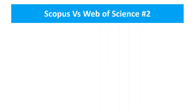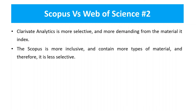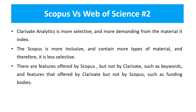Clarivate is more selective and more demanding regarding the material it indexes. For indexing in WoS you need more material — they are very selective. Whereas Scopus is more inclusive and contains more types of materials, and therefore it is less selective. This is the big difference between these two databases: WoS is more selective and Scopus is less selective.